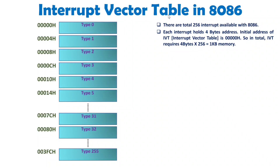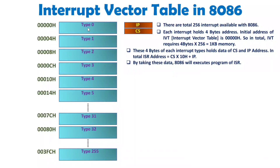The 8086 can have a total of 1 MB of memory as per its 20-bit addressing. Out of that, 1 KB is used by the Interrupt Vector Table. Now, why do we have 4 bytes for each type? We have 4 bytes to hold the IP and CS of that interrupt. IP is 16 bits (2 bytes) and CS is also 16 bits (2 bytes), so total 4 bytes of IP and CS are loaded for each type.